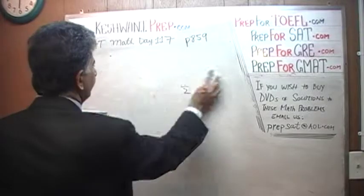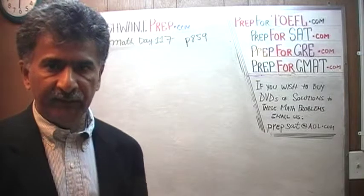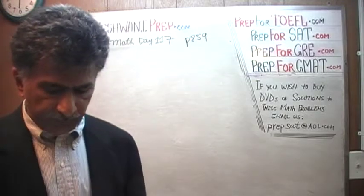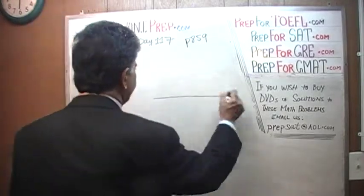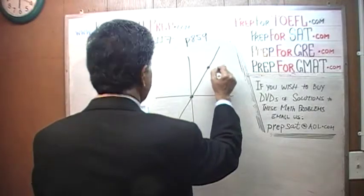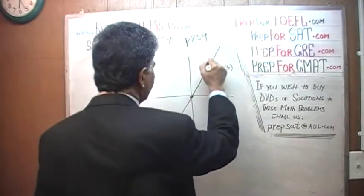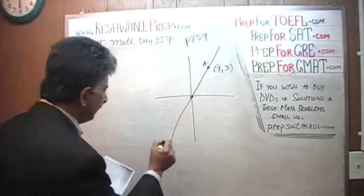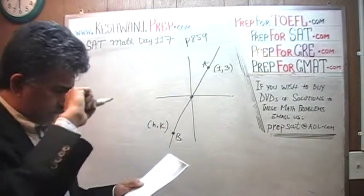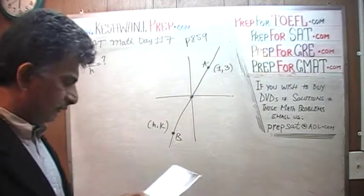Number 9. We are given this point 1 and 3. Instead of calling this point and that point, let's give it a name. Let's call it A. And then we have given another point here, which we are told is H and K. Let's call it B. The question is, what's the value of K over H? It's a tricky question.